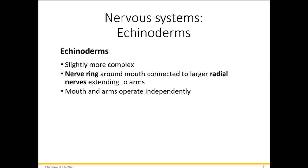Echinoderms are a bit more complex — they have a nerve ring. Like cnidarians, they have radial symmetry, with a radial network extending to each arm. Typically they have five equal sections, with a nerve extending to each arm. The arms can work independently, which is different from cnidarians where exciting one nerve excites the entire network.